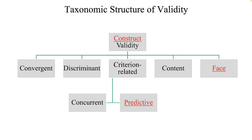There are many, many types of validity. Here are some of the major types used in human resource management. Validity represents the strength of the relationship between scores and a thing, or between scores on two things. The key is that validity is about relationships and about scores. Let's look at the taxonomic structure of validity briefly here, and in separate slides to follow.